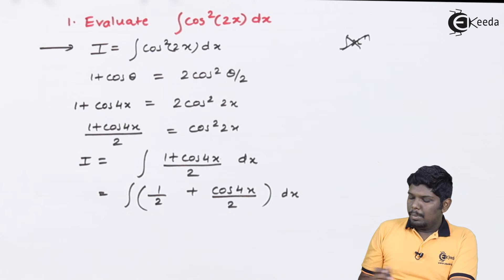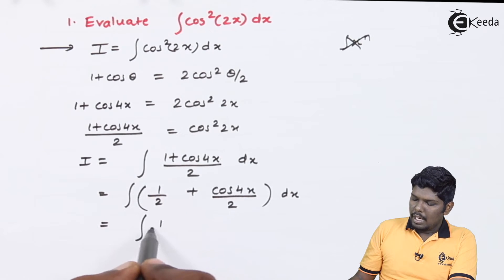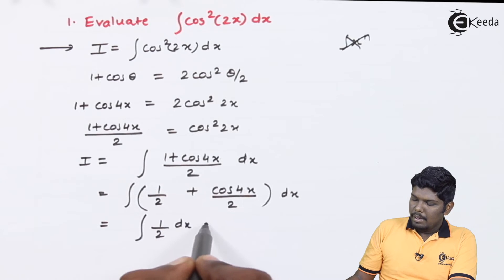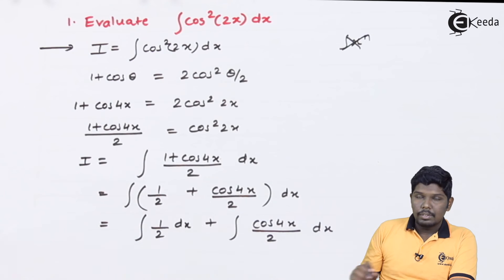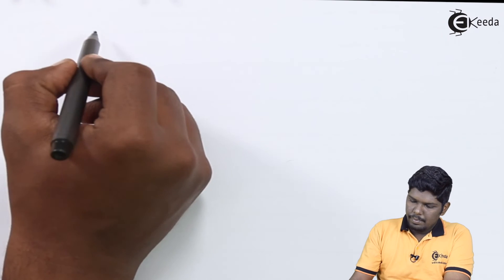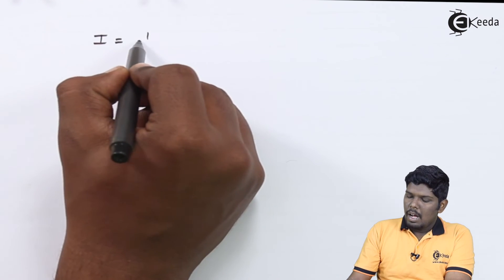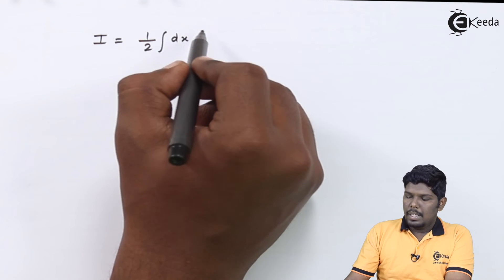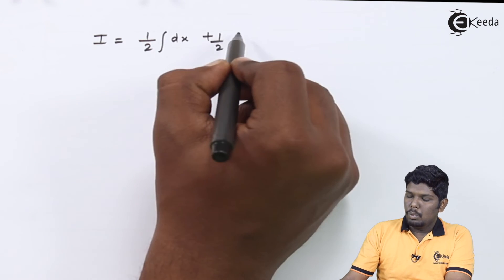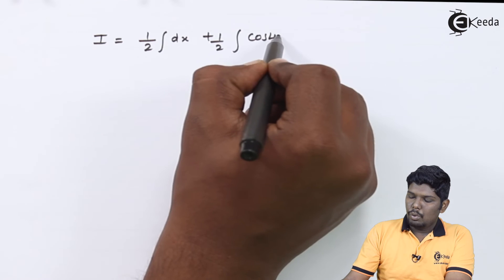In the next step, you can separate integration. That will give you integral 1 by 2 dx plus integral cos 4x upon 2 dx. In the next step, you can take constant part outside the integral. That will give you half integral dx plus 1 upon 2 integral cos 4x dx.